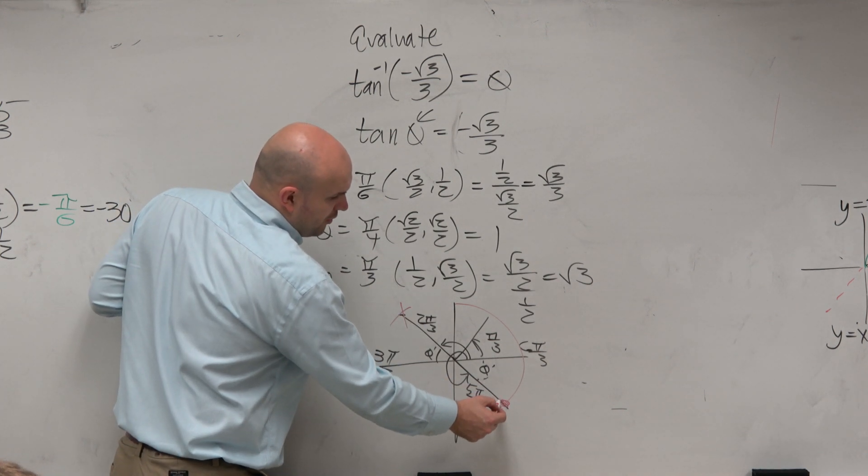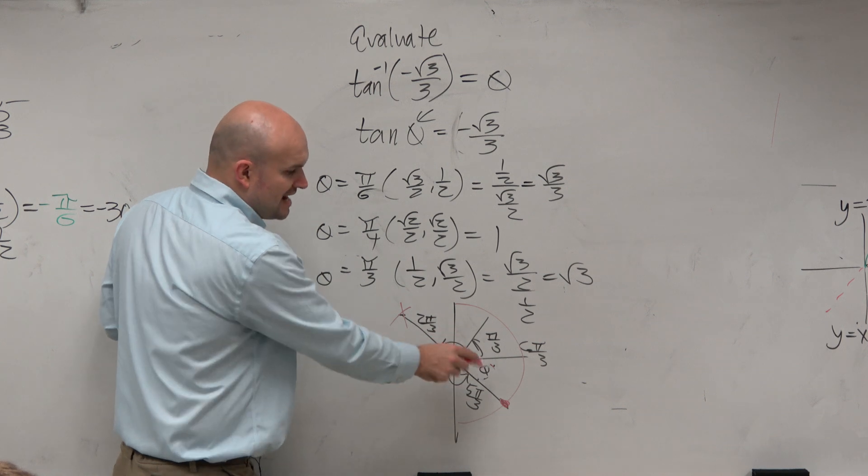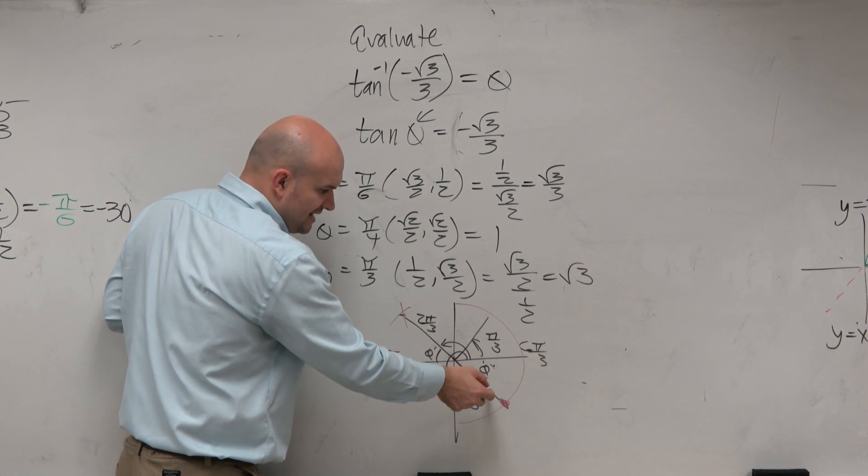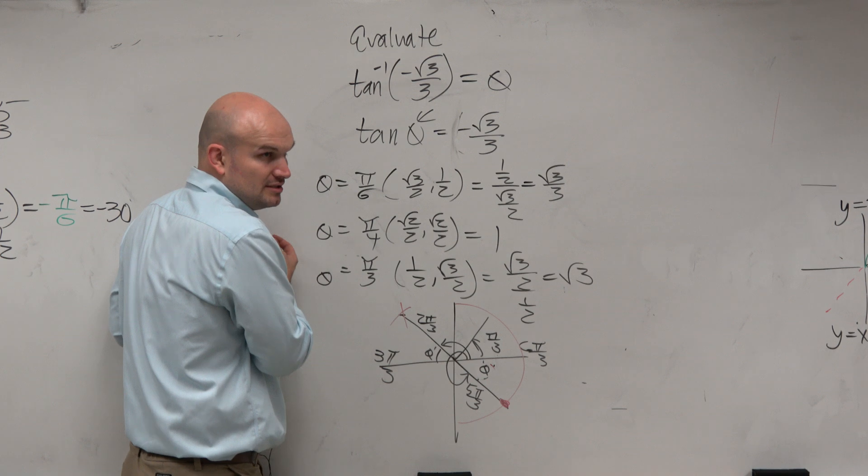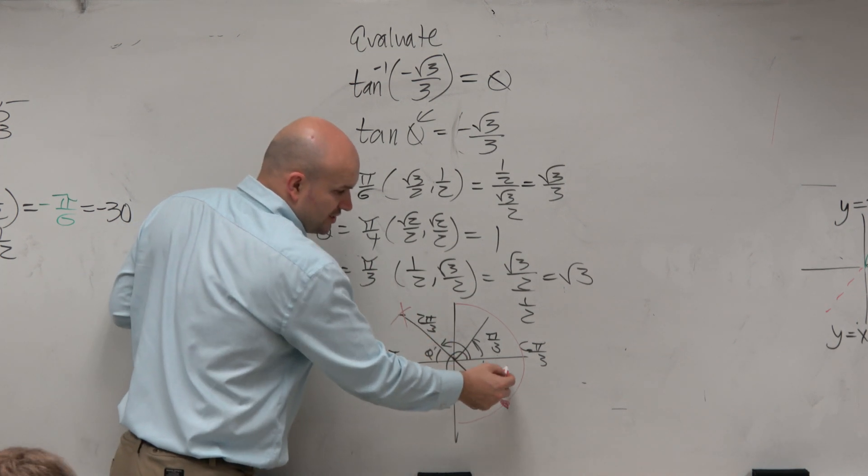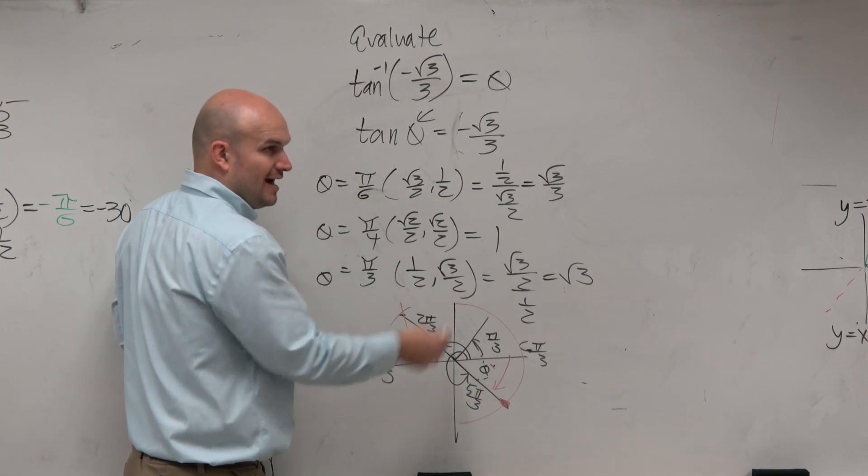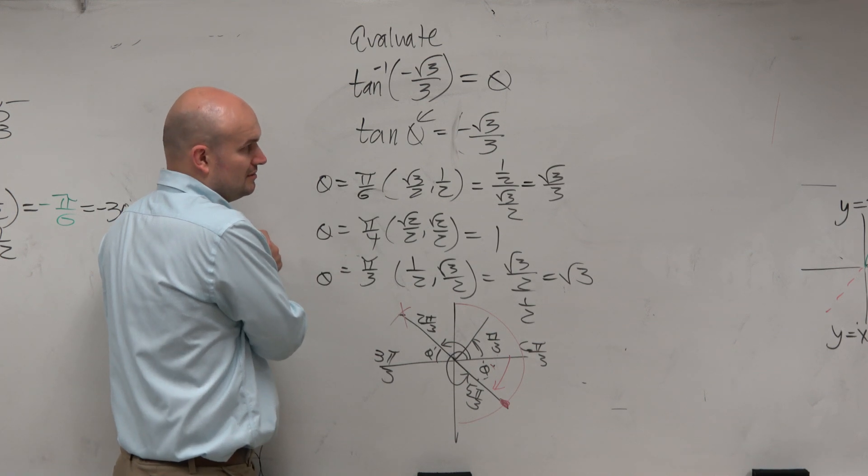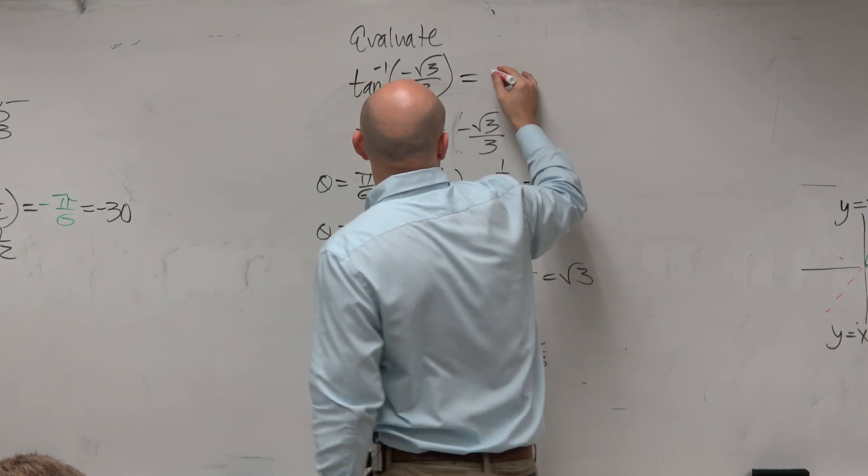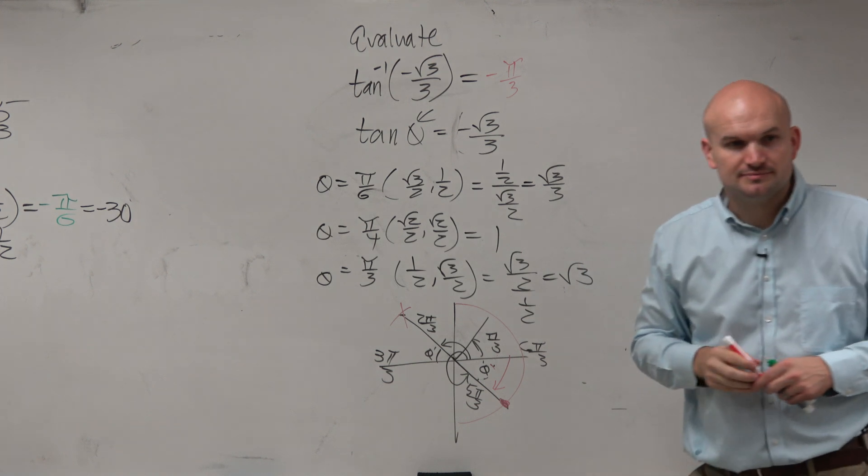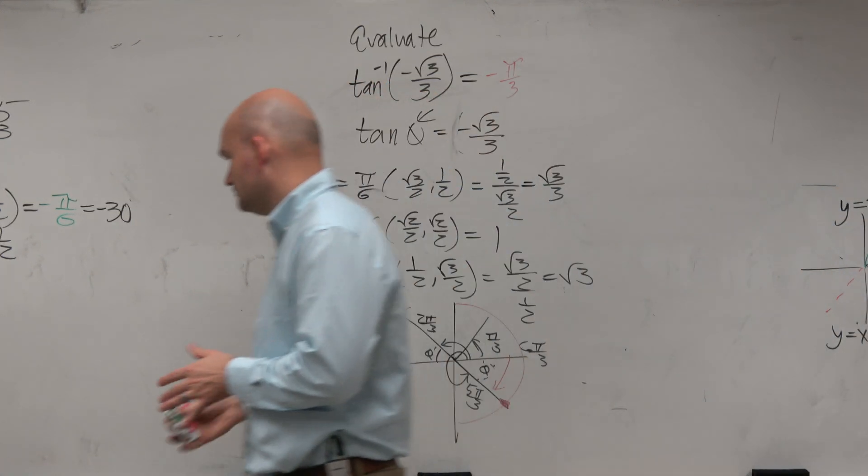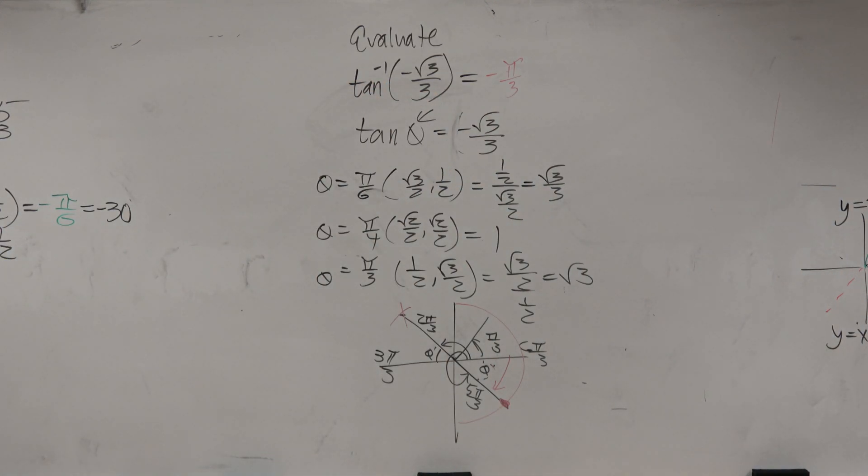So this is the only point, the only terminal side that's going to work. So how do I go from here to here, staying within the restriction? I just need to go this way, the negative version. And how far do I need to travel? Negative pi over 3. Negative pi over 3. And that's your answer. All right, so enough of me talking.